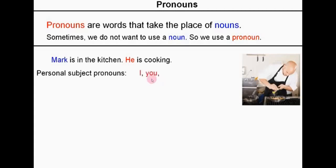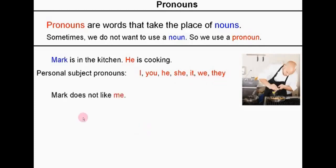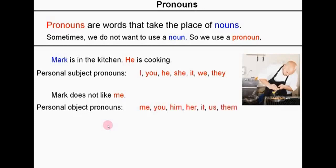He is in fact an example of a personal subject pronoun. And the others are I, you, he, she, it, we and they. Mark does not like me. So 'me' is an example of a personal object pronoun. The personal object pronouns are me, you, him, her, it, us and them.